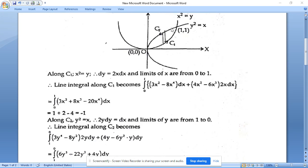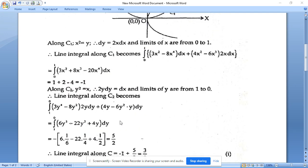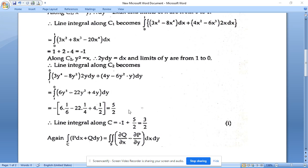Don't forget along C2, the direction is important. y varies as 1 to 0, not 0 to 1. So always we have to travel in positive direction, which means anticlockwise direction. So these are the line integral values. The sum indicates the closed line integral.